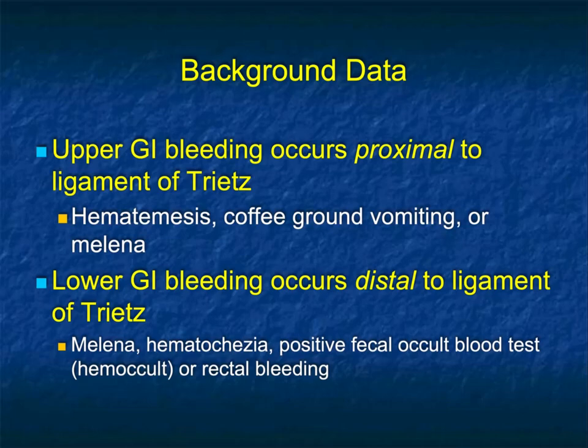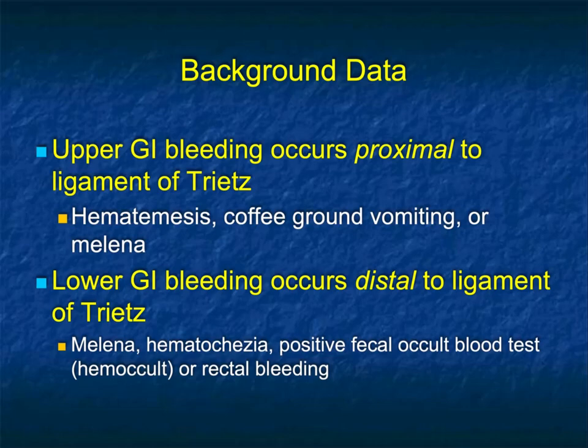We typically talk about upper and lower GI bleeding. Upper GI bleeding is defined as proximal to the ligament of Treitz, with presentations including hematemesis, coffee ground vomiting, or melena. Think about a gastric ulcer. Lower GI bleeding occurs distal to the ligament of Treitz, with presentations including melena, hematochezia, positive fecal occult blood tests, or rectal bleeding. Think of diverticulitis and GI bleeding as one classic example.